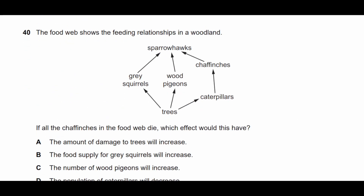Question forty: the food web shows feeding relationships in a woodland. If all the chaffinches die, what effect will this have? As chaffinches decrease, caterpillars will increase because they have fewer predators. More caterpillars means more damage to trees. Sparrowhawks, wood pigeons, and grey squirrels will decrease. Therefore the amount of damage to trees will increase — the answer is A.